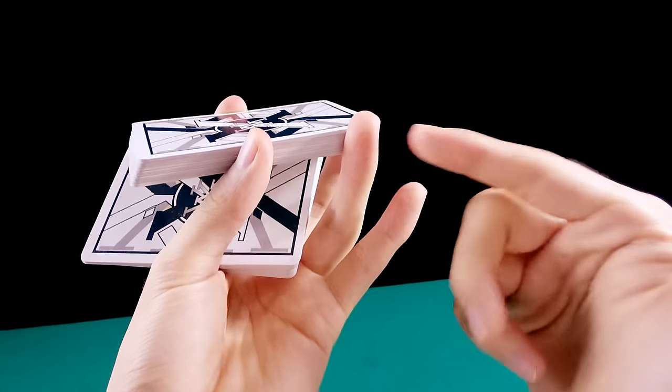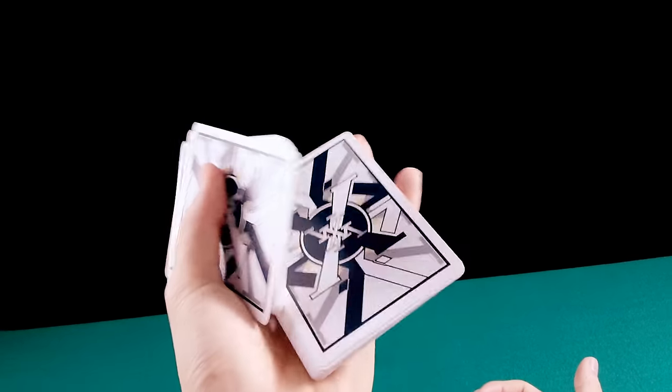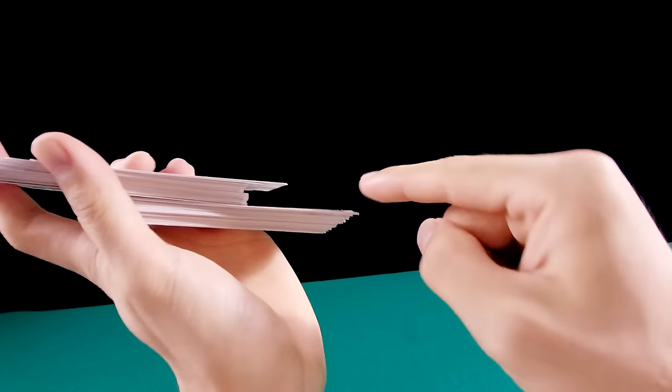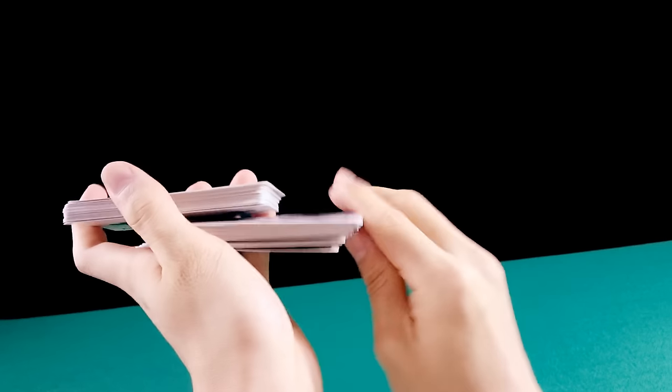Faz de conta que eu coloco o dedo anular muito na ponta. Eu vou girar. E veja que quando eu giro, o monte vai ficar aqui. Ele não está alinhado com o monte de cima. E na hora que eu fecho, ele fecha assim.